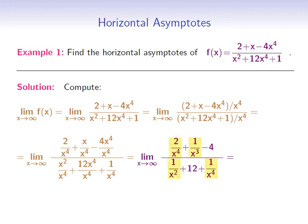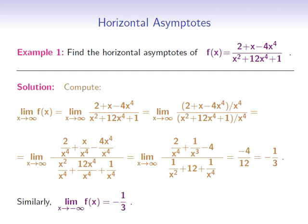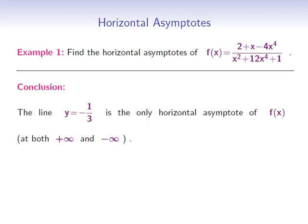To compute this limit, we observe that we have four terms that contain x and they all have the form of a number divided by a positive power of x. Since positive powers of x tend to infinity as x goes to infinity, those four terms will tend to 0. Therefore the whole limit will be equal to negative 4 divided by 12, which is equal to negative 1 third. A very similar computation shows that the limit of f as x goes to negative infinity is also equal to negative 1 third. Therefore the line y equals negative 1 third is the only horizontal asymptote of f at both positive and negative infinity.